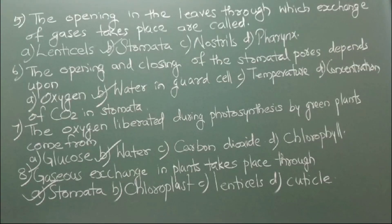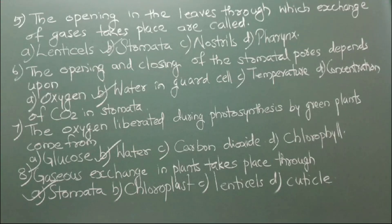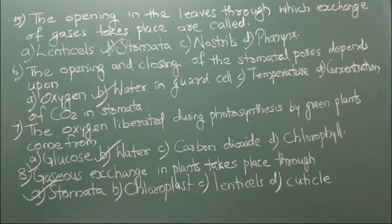Number 5: The openings in the leaves through which exchange of gases takes place are called A. Lenticels, B. Stomata, C. Nostrils, D. Pharynx. The correct answer is option B, stomata. Number 6: The opening and closing of the stomatal pores depends upon A. Oxygen, B. Water in guard cell, C. Temperature, D. Concentration of carbon dioxide in stomata. The correct answer is option B, water in guard cell.